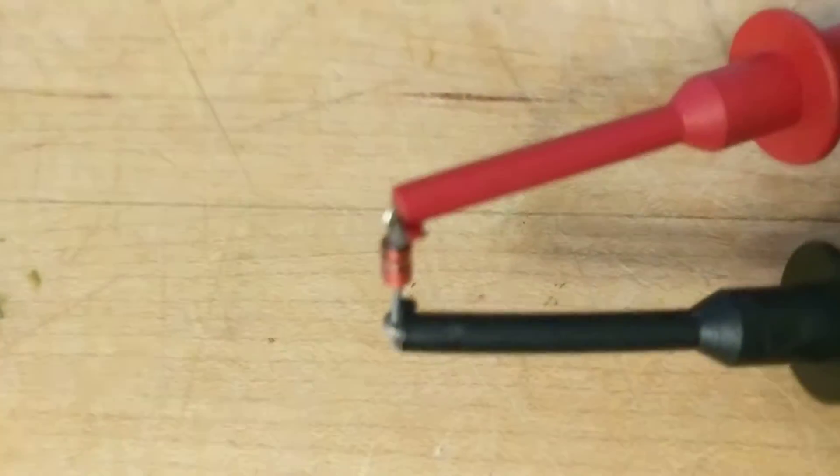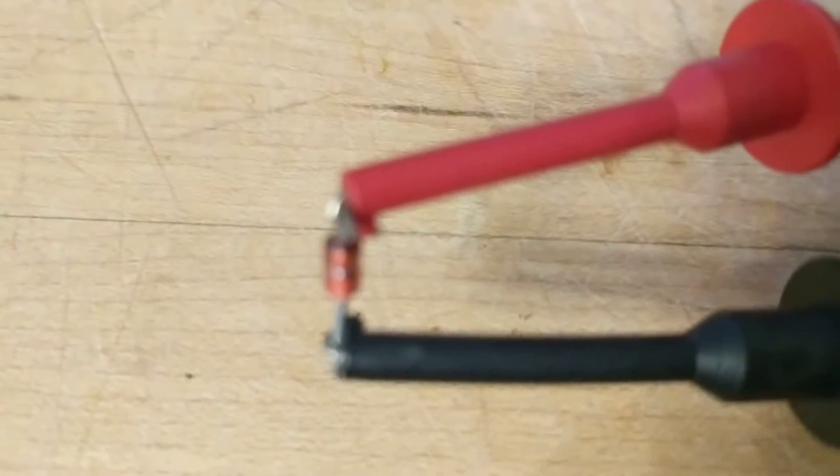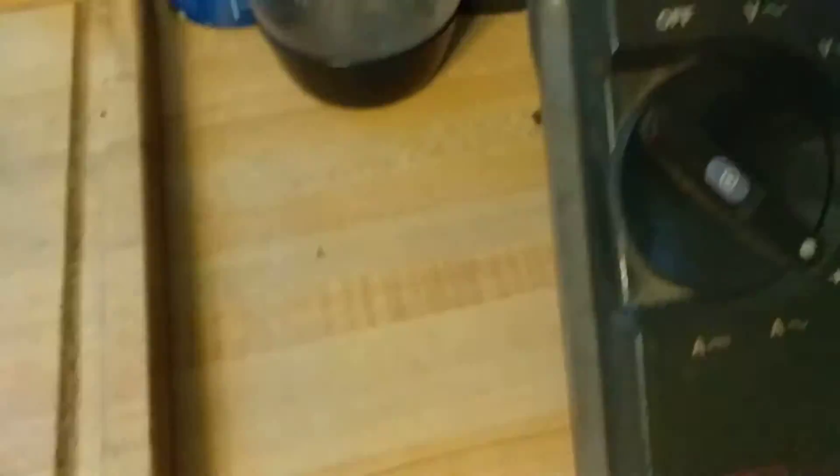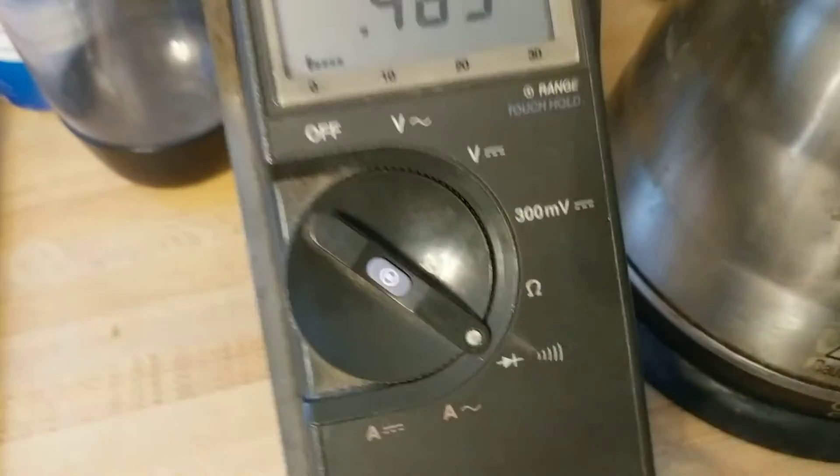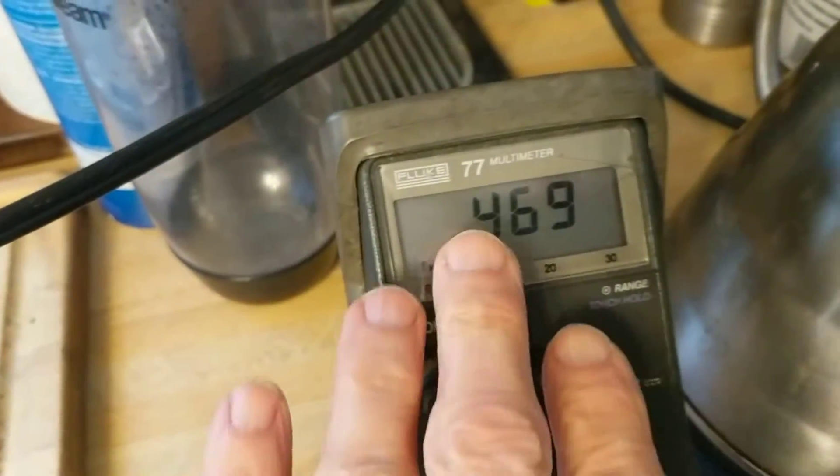So what I did was I pulled that Zener diode off the board. You can see here that I have it set up on the diode measurement for my Fluke meter.